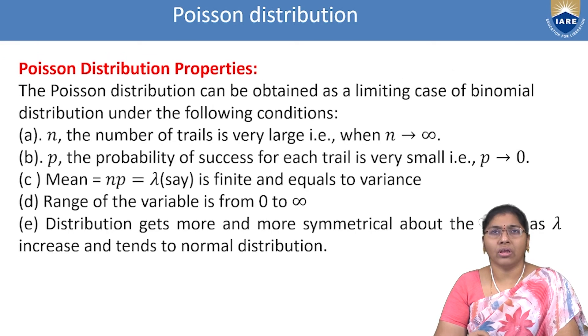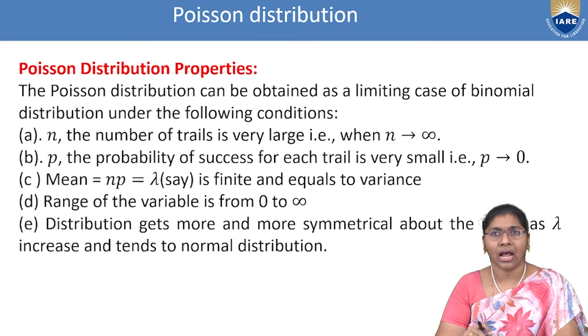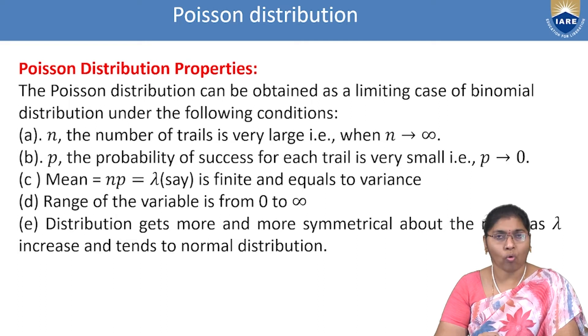Next, the properties of the Poisson Distribution. The Poisson Distribution can be obtained as the limiting case of the binomial distribution under the following 5 conditions.